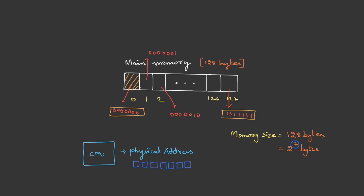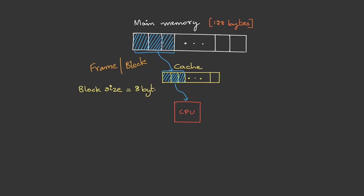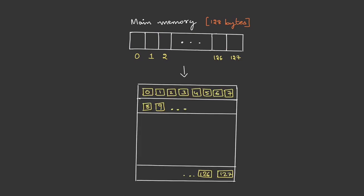All zeros point to the first byte and all ones point to the last byte. Since main memory is relatively slower, we use cache. When the processor needs a byte of information, instead of transferring one byte, a chunk of data bytes is transferred. This chunk is called a frame or a block, and this is done to take advantage of spatial locality, because usually instructions are in sequence, so the chance of usage of the next byte is high. Now let's take the block size as 8 bytes.